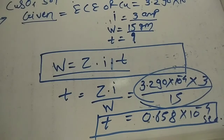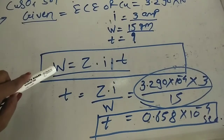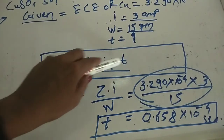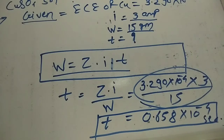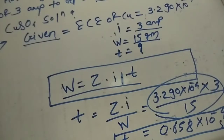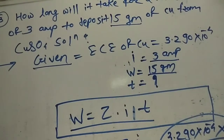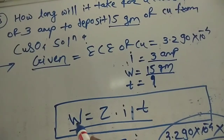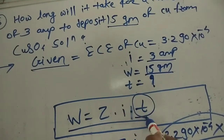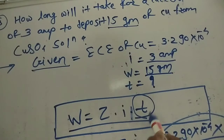Today we studied three types of problems. In the first, we applied Faraday's law W = Z × I × T to find weight deposited. In the second, we found the electrochemical equivalence when two metals have the same quantity of electricity passed. In the third, the given terms were W, Z, and I, and we found the time required to deposit the metal ions.